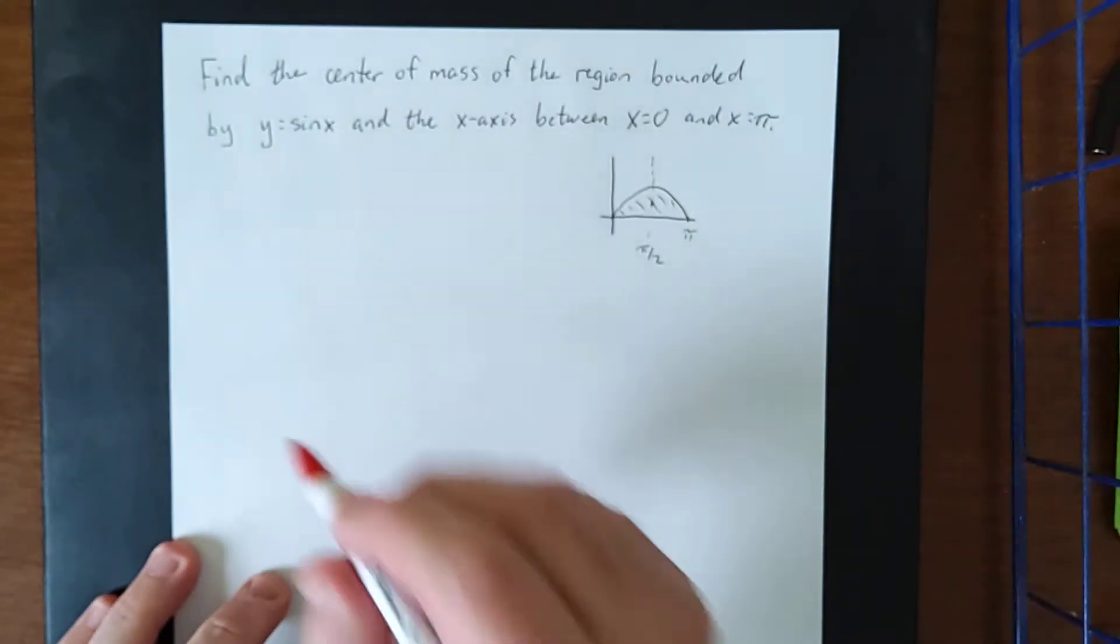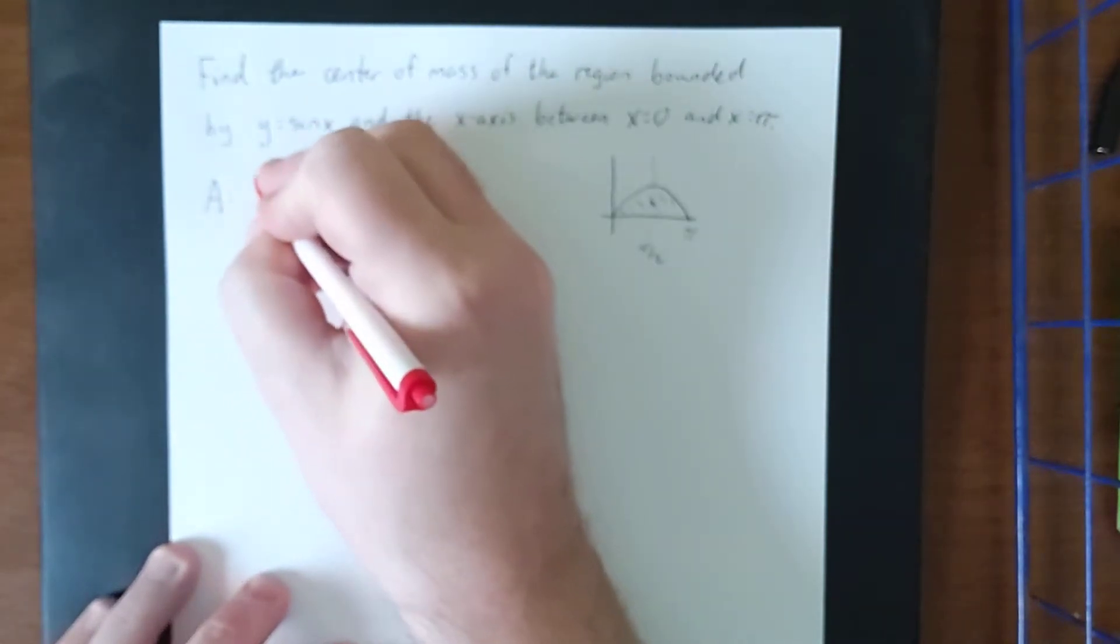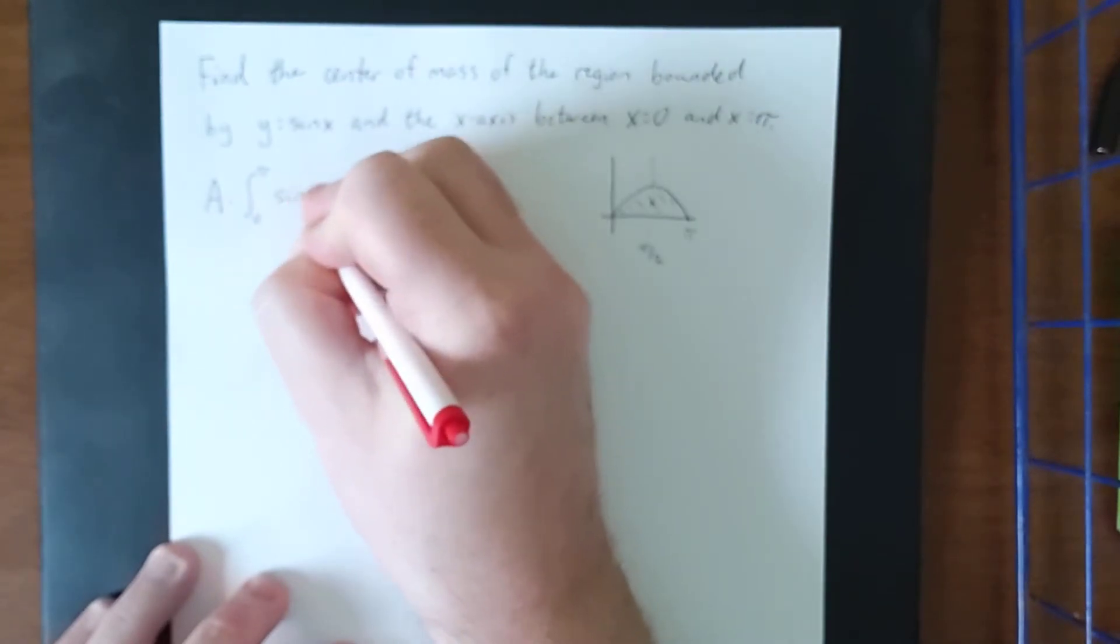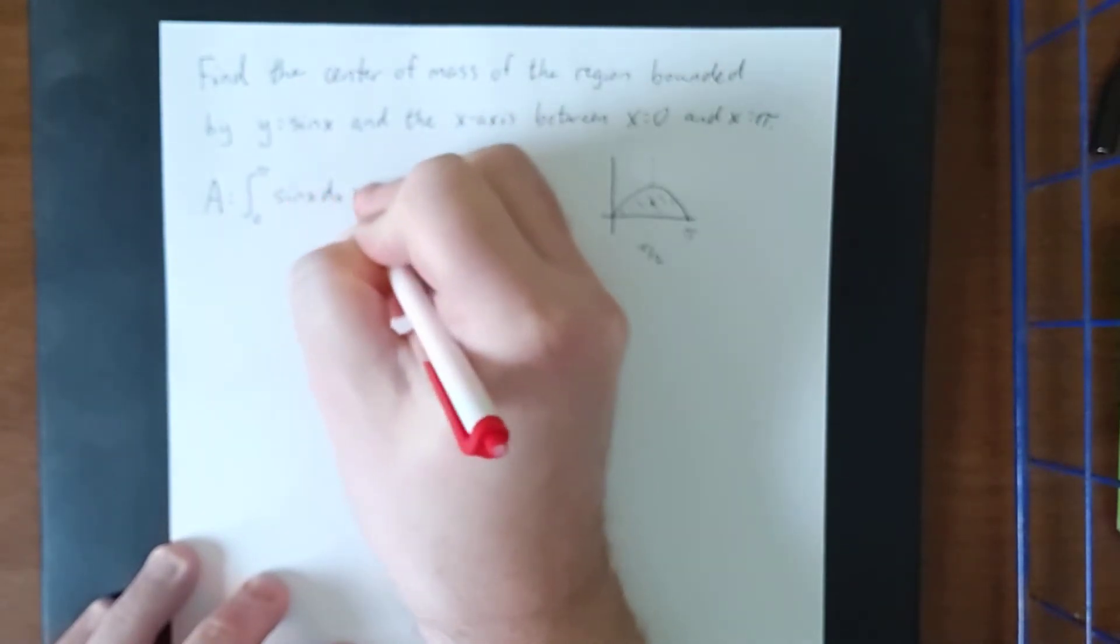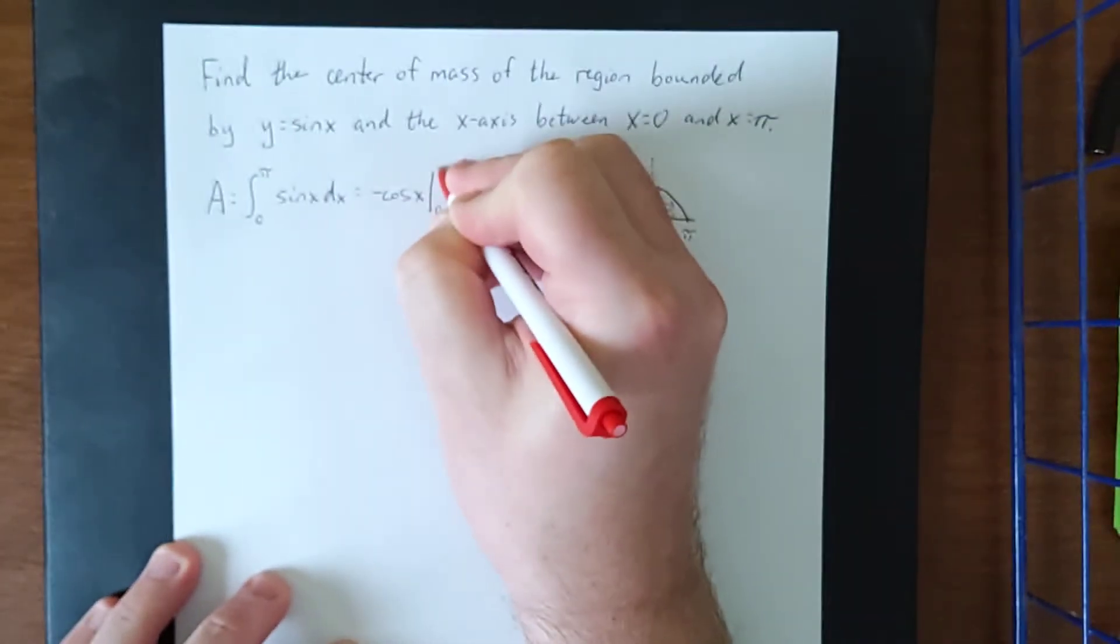So three integrals that we need to set up. First one is going to be the area of the region. Area of the region is going to be a very straightforward definite integral from zero to pi of the function in question. No top minus bottom, nothing fancy on this one. It's just straightforward.